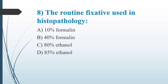Eighth question: What is the routine fixative used in histopathology? Option A: 10% formalin. Option B: 40% formalin. Option C: 80% ethanol. Option D: 85% ethanol. The answer is Option A, 10% neutral buffered formalin. It has advantages including fast tissue penetration, good preservation of morphological features, compatibility, low cost, and ease of handling. The most commonly used histopathology fixative is 10% formalin.